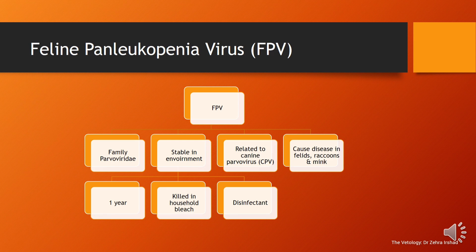Feline panleukopenia is caused by feline panleukopenia virus (FPV), which belongs to the family Parvoviridae. The virus is stable in the environment for up to one year, but it can be killed using household bleach at a ratio of 1:32 or a disinfectant such as peroxygen.